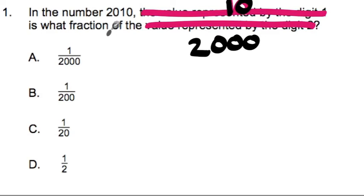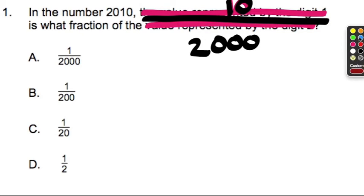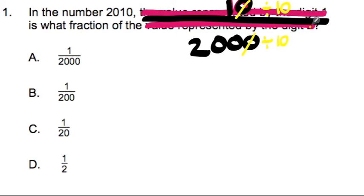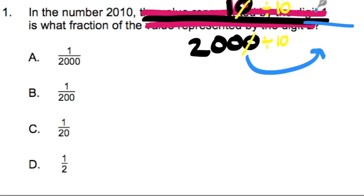Now let's add in this idea of the fraction. A fraction always has a part to whole. So in the number 2,010: 10 is what fraction of 2,000? We have our fraction right here — 10 divided by 2,000. Now we can cross off the zeros, but let's think of it as dividing by a factor of 10. In later videos using fractions, we'll talk about why we divide by factors of 10. 10 divided by 10 is 1, and 2,000 divided by 10 is 200. This conveniently gets us to the answer: 1/200.